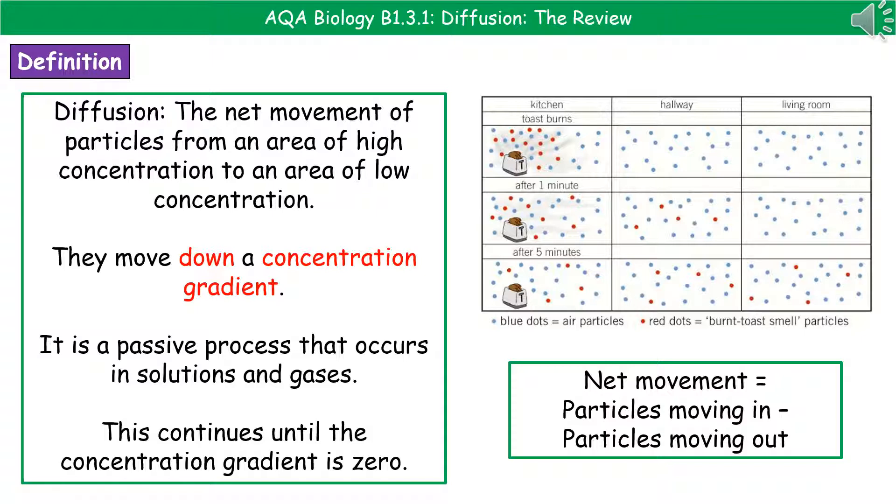I've given you a little diagram on the right there just to show you what we mean. So at the beginning, we've got the little red particles, which are the burnt toast smell. And you can see how the blue particles, which is the rest of the air, are pretty evenly spaced. As time goes on, the red particles diffuse through the air from the area of high concentration near the toaster to the area of low concentration, the other rooms, until they're actually nice and equally distributed.